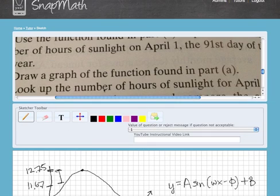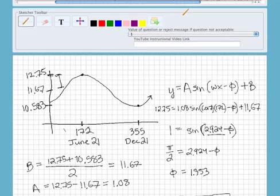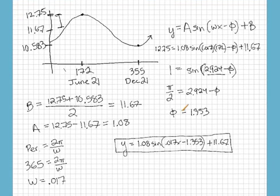And I also, I think they asked for the 91st day. So what you do is you just plug in 91 for x. And if we do that, I'll do that on my calculator right now. Value of 91. So when we plug in 91, so when x equals 91, y will equal 11.878. So there's about 11.878 hours of daylight on April 1st.